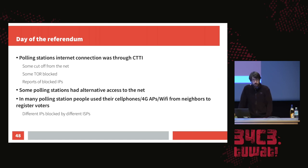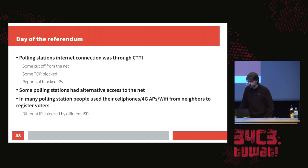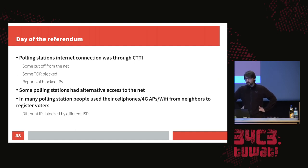Internet connection in the polling stations, which runs through CTTI, had various disruptions — it's not totally clear what happened because there's so much different information from different polling stations. Some got cut off from the net totally. Some got cut off only partially — for example, Eduroam Wi-Fi didn't work but cable network did work. In some, you could not access using the Tor client. Some reported that IP addresses got directly blocked. Some polling stations had alternative access to the net, but that was a minority. So in many polling stations, people used their cell phones, 4G access points, or neighbors opened their Wi-Fi so voters could be registered.